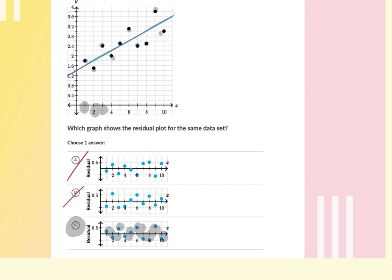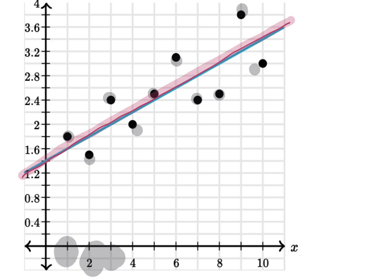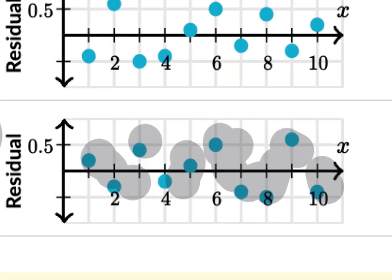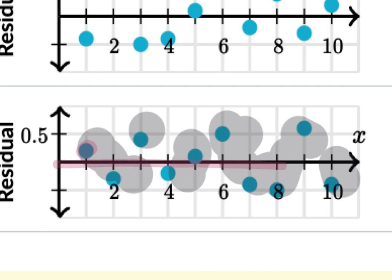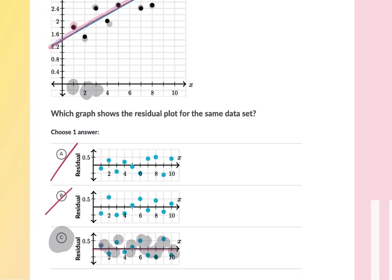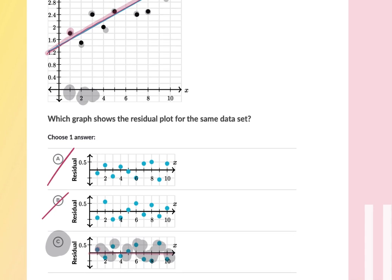At x equals 1, the predicted value from the line is less than the actual value, which means the model underestimated. The line literally lies under the actual point. The R-value will be specific to each point — if you had one that matched perfectly, R would be zero there. The residual plot maps each of those distances to its corresponding x-value.